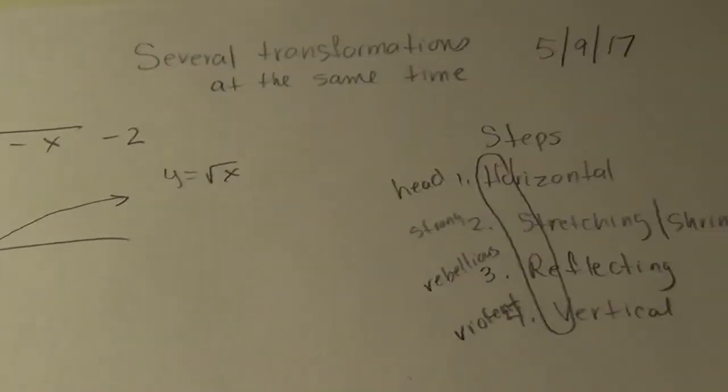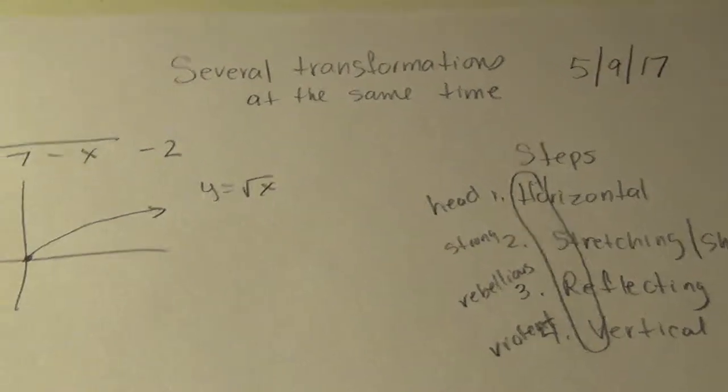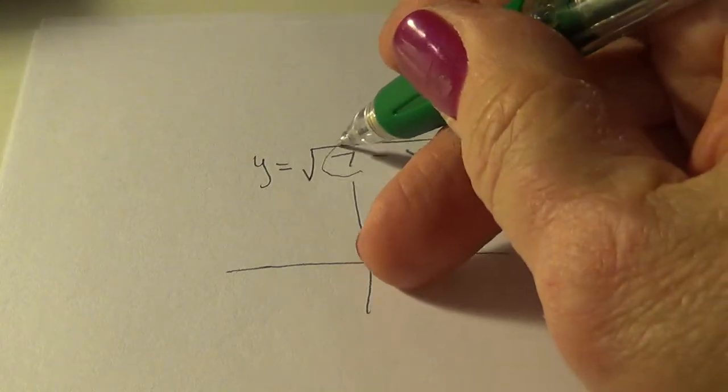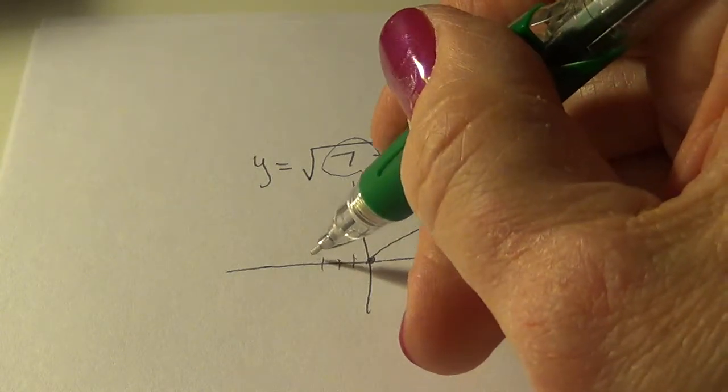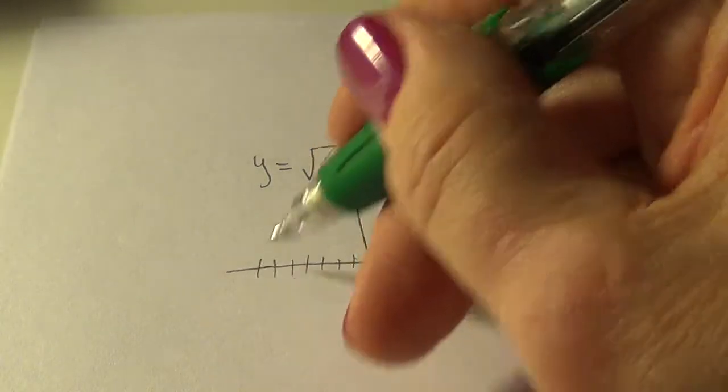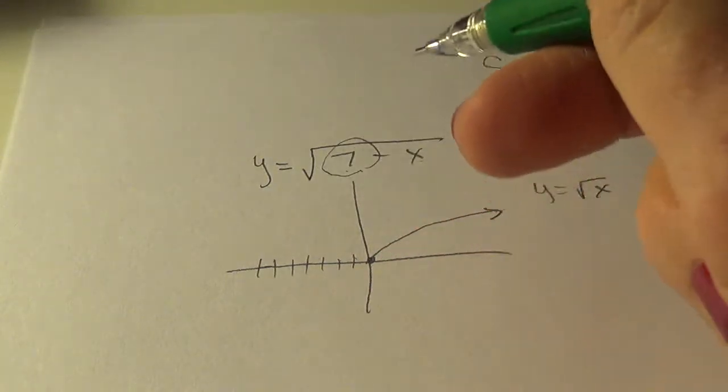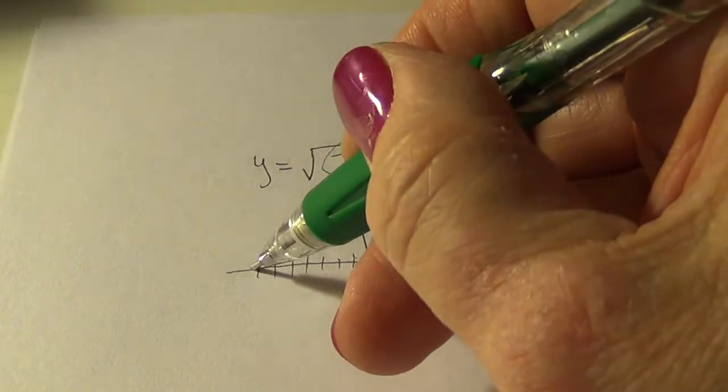Now according to our list, we're going to do the horizontal transformation first. So that is a positive 7, which makes us move this way. See, when the change is hugging the x inside of the function, we do a right-left, the opposite of what you would think.